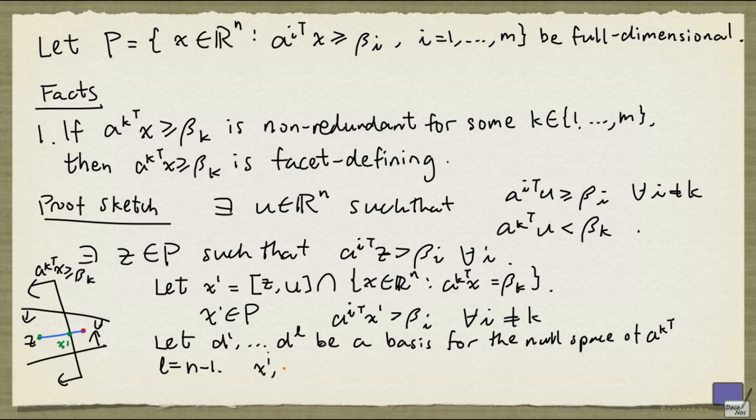Now, if we look at these vectors, where epsilon is positive, if epsilon is sufficiently small, all these will lie in P, and they are affinely independent.